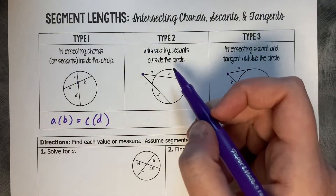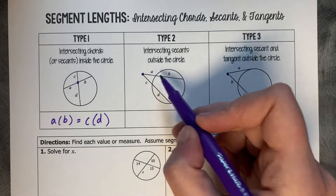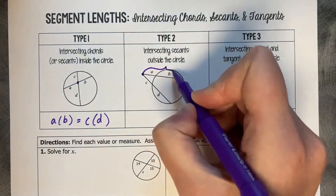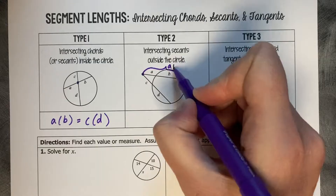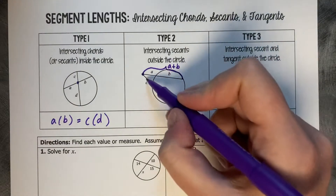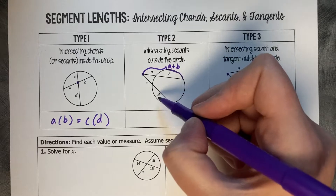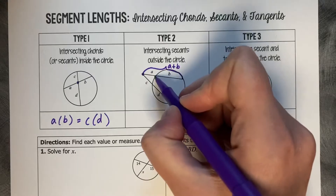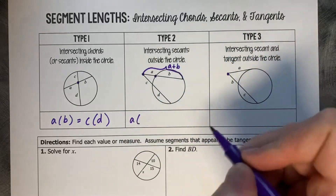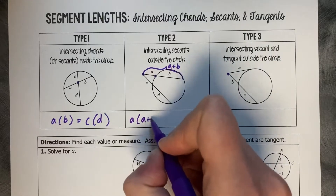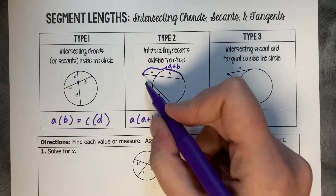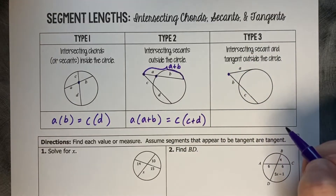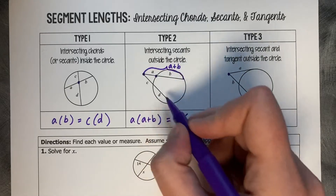For type 2, you are multiplying the segments together, but it's not just these two segments — you have to include the whole segment. So this entire length we would call A plus B, and this entire length we would call C plus D. So when you multiply it, you do the length from the intersection to the edge of the circle: A times the whole segment A plus B, equals the small chunk C times C plus D. Part times whole, part times whole.